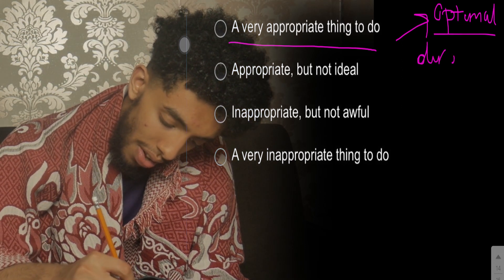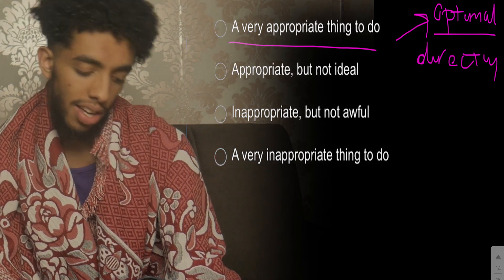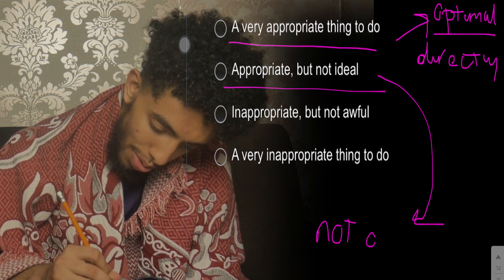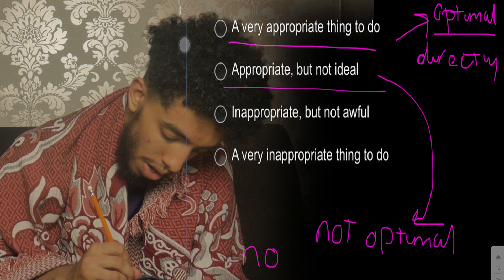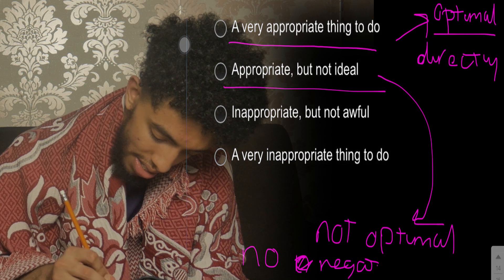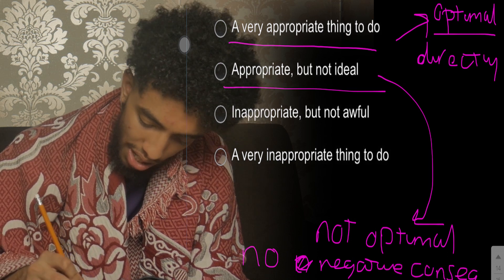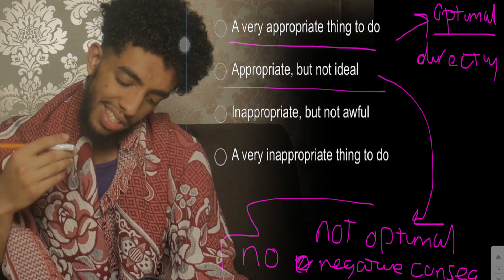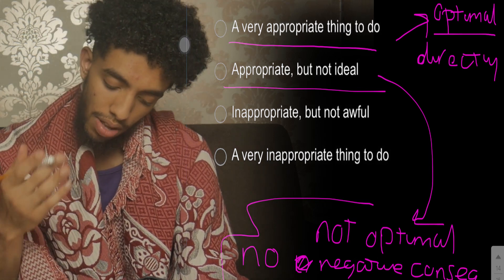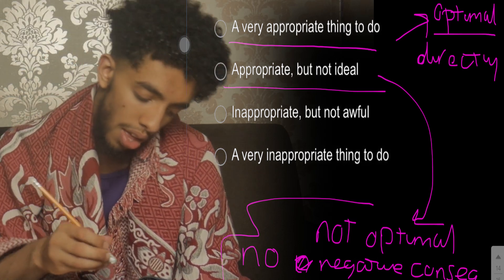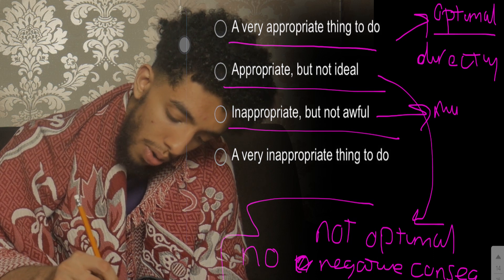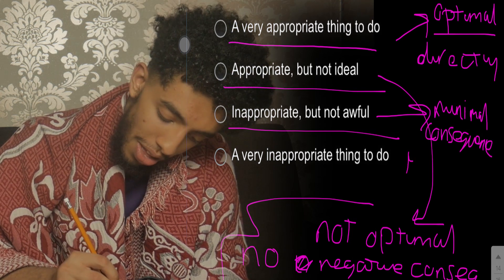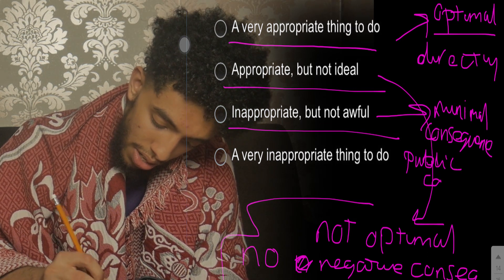That's the best course of action a person can take. Now 'appropriate but not ideal' essentially means it's not amazing — not optimal — however there are no bad or negative consequences to public safety or patient health. To reiterate: it's not optimal but there are no negative consequences to public health or patient health. 'Inappropriate but not awful' means there are minimal consequences to public concern and patient health.